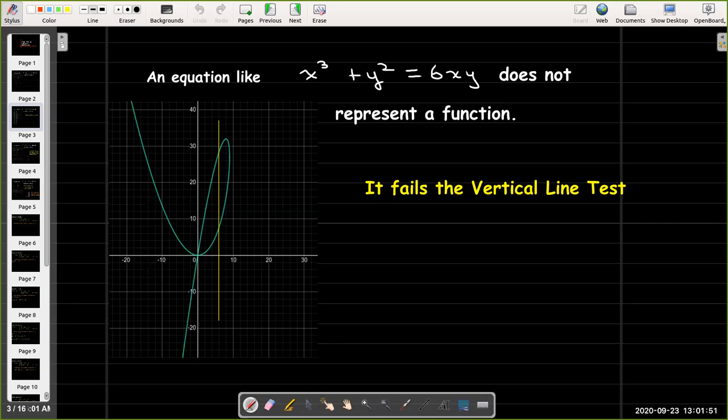At any number of points, I can draw a vertical line and it will cut through the graph in more than one point. In fact, we can see that the curve itself turns around and crosses itself at the origin.